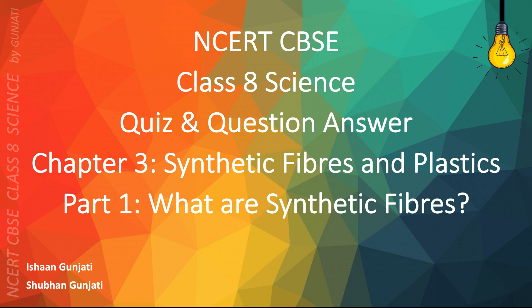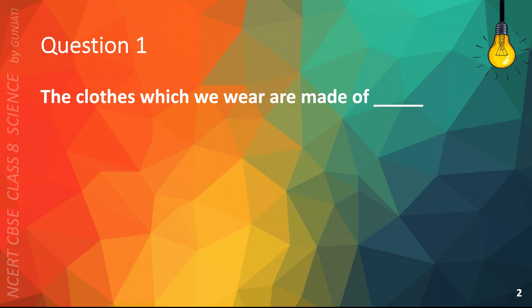Let's get right into the quiz. Question 1. The clothes which you wear are made of A. Fabrics, B. Metal, C. Oxygen, or D. Paper. The correct answer is A. Fabrics.